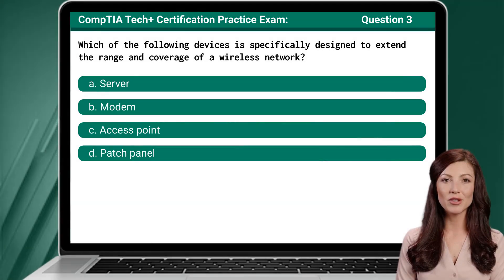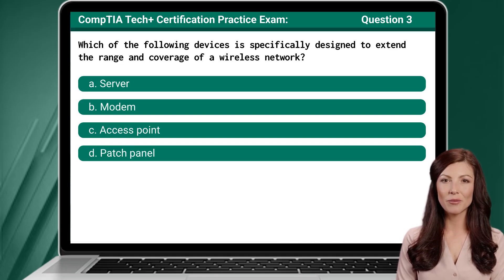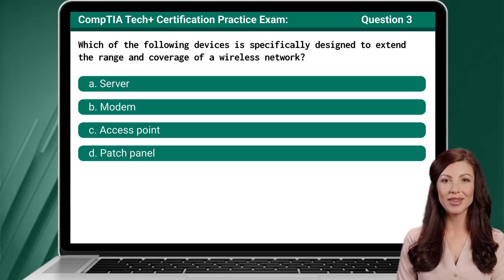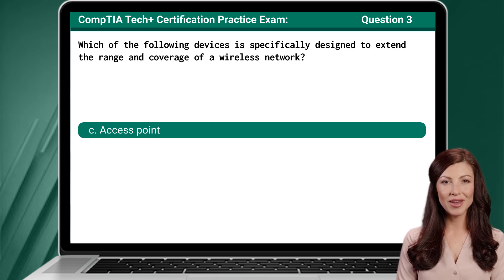Question 3. Which of the following devices is specifically designed to extend the range and coverage of a wireless network? The answer is C: access point.